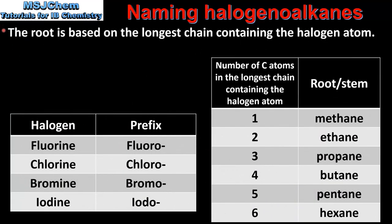Next we look at how to name halogeno alkanes. The root of the name is based on the longest carbon chain that contains the halogen atom. In this table on the right we can see the number of carbon atoms in the longest chain and the root or stem: 1 carbon atom is methane, 2 is ethane, 3 is propane, 4 butane, 5 pentane and 6 hexane.